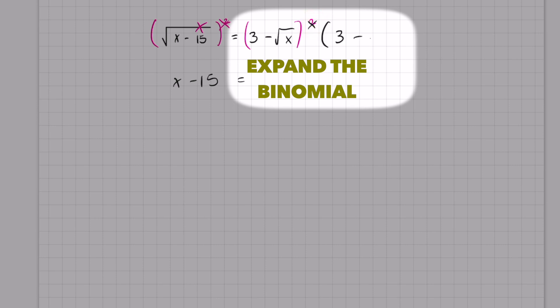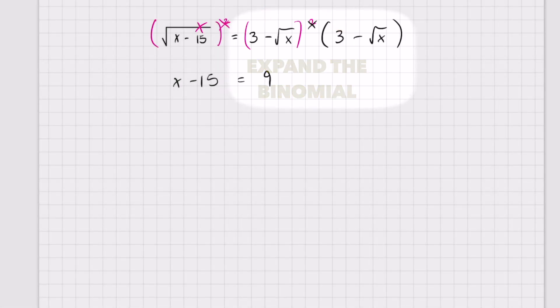Sometimes I just write it on the side like this to save time. 3 times 3 gets me 9. The middle term is going to be 3 times negative square root of x and negative square root of x times 3, which yields negative 6 root x, and negative square root of x times negative square root of x.